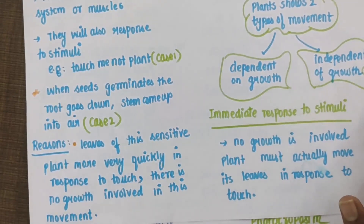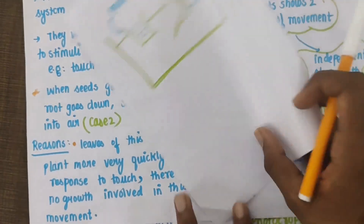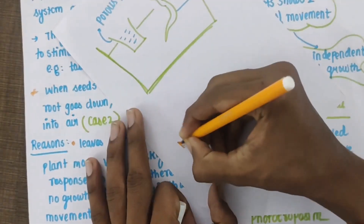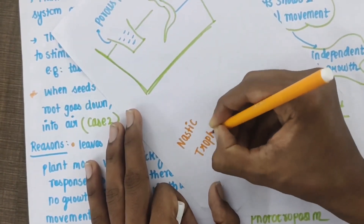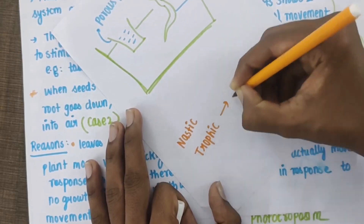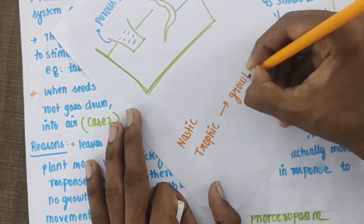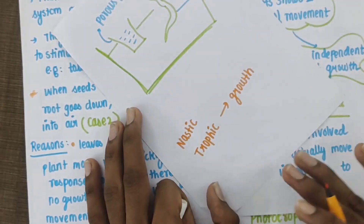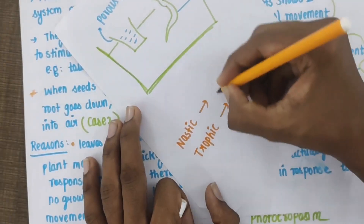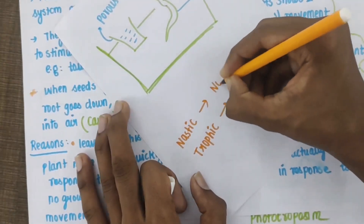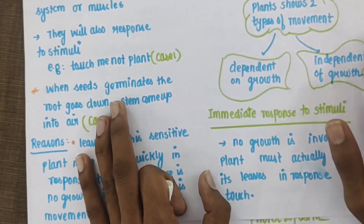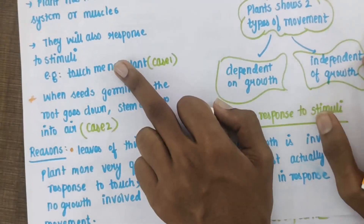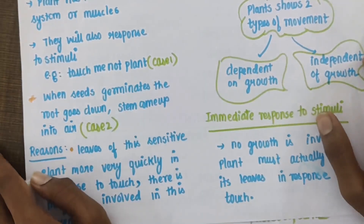The response in plants is of two types: tropic movement and nastic movement. Note these words — they are very important. Tropic movement involves growth, so there is involvement of growth. Nastic movement does not involve growth. The first case is nastic movement and the second case is tropic movement.